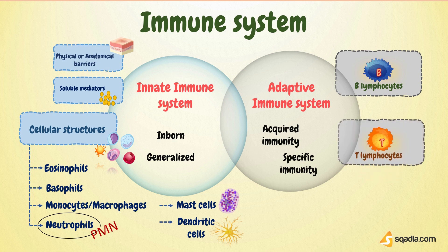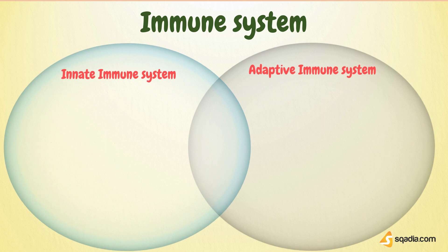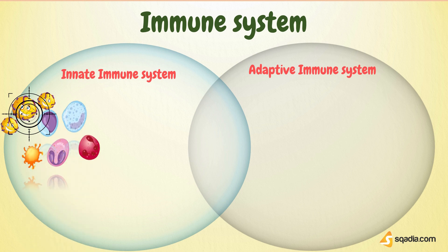Let us see what happens. When a microbe enters our body, it is termed an antigen if it has the ability to generate an immune reaction against it. So, once the cells of the innate immune system come in contact with these antigens, they get detected as a foreign body, and then necessary actions are taken against these antigens, such as initiating an inflammatory response.